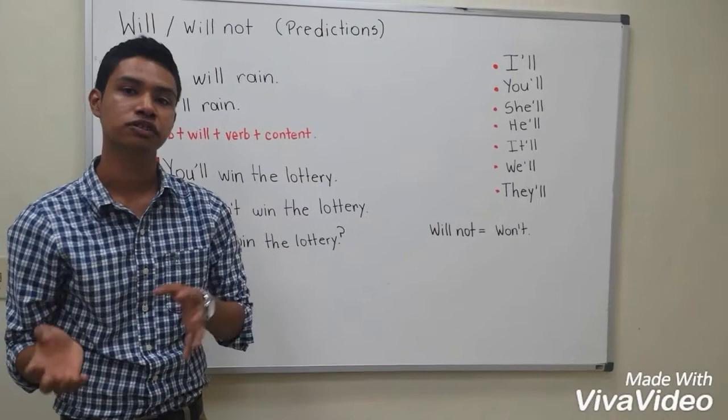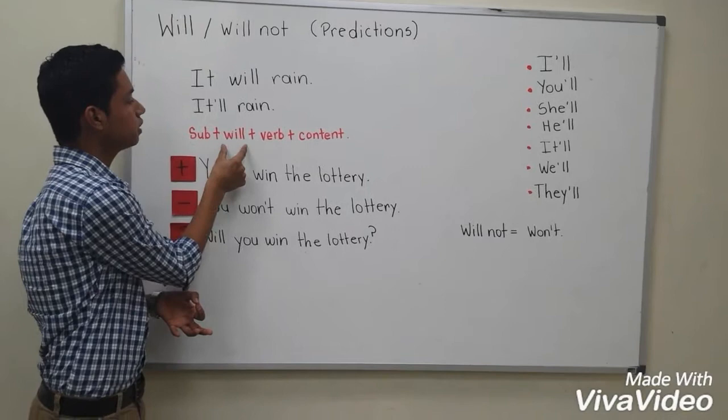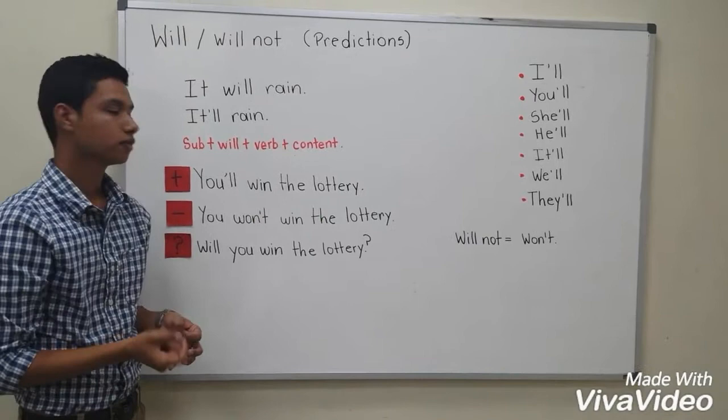If you are going to use won't, you can use it in negative form. And how are you going to make a sentence? If you are going to make a sentence, put the subject first, then will, then the verb — and you are not going to change the base form of the main verb — and then the complement.